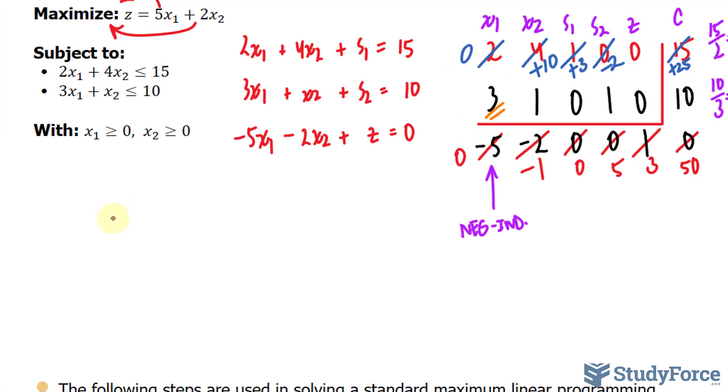Let's recreate our matrix. We have, once again, 0, 10, 3, negative 2, 0, and 25. That's that first row. This row is 3, 1, 0, 1, 0, and 10. And that last row is 0, negative 1, 0, 5, 3, and 50.